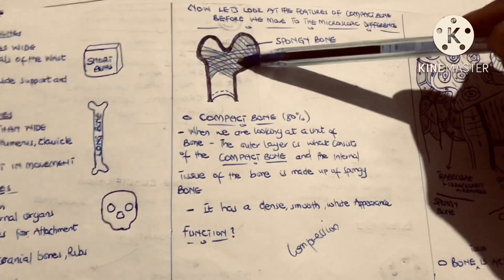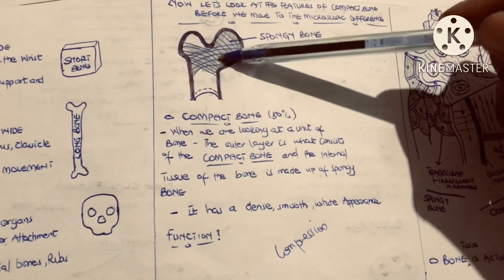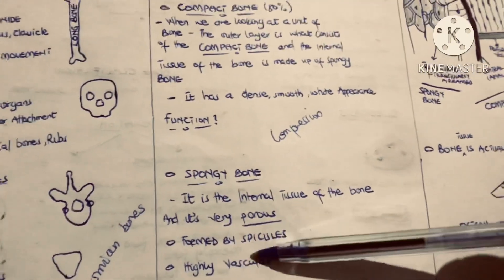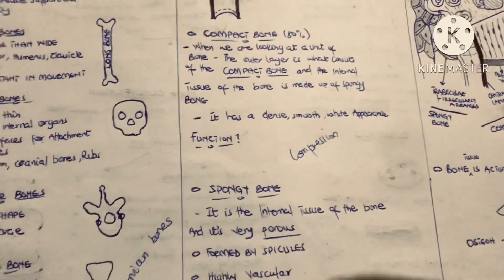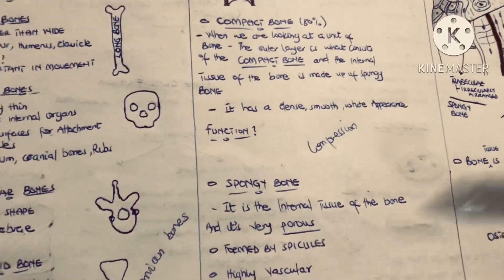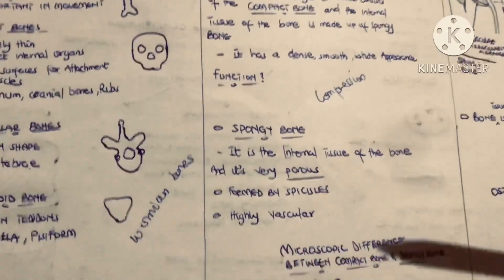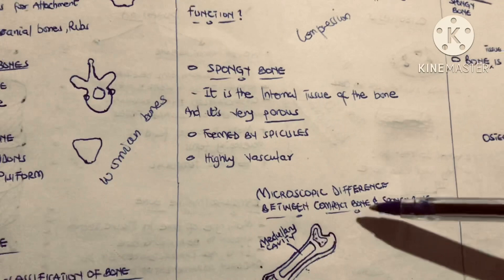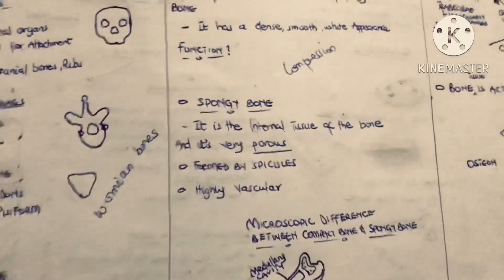The spongy bone, as mentioned, is the internal tissue of the bone. It is very porous, with many holes that serve as passageways for blood vessels. Because of that, spongy bone is highly vascular — it contains more blood vessels than compact bone. Because it is porous, it is also weaker. Spongy bone is formed by trabeculae. In the next video, we will look at the microscopic differences between compact bone and spongy bone.